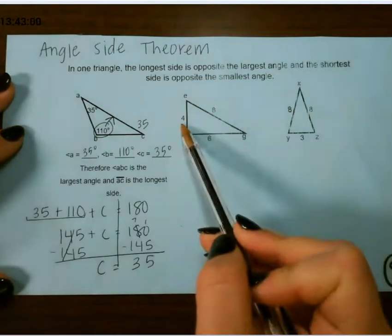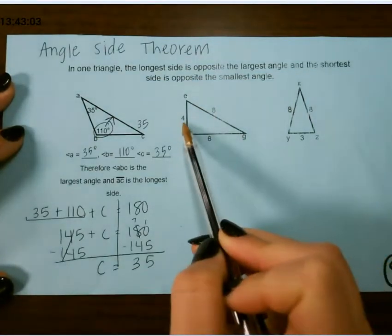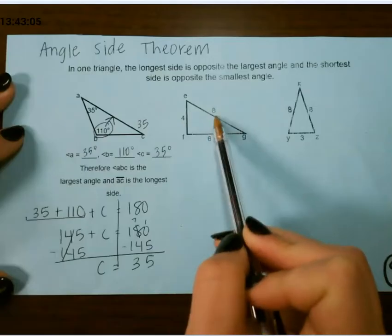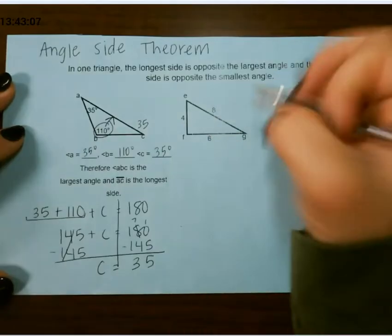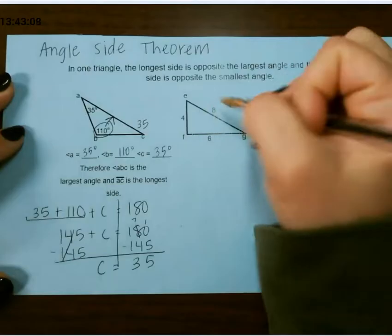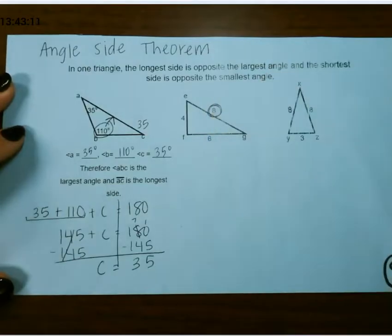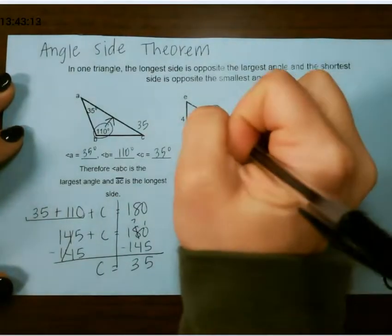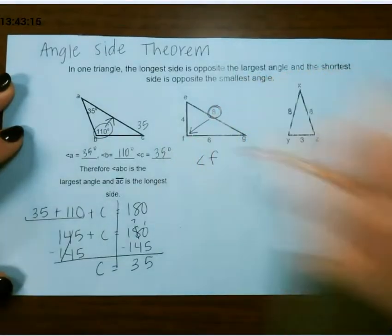On this one, we're just looking at side lengths. So we have a side length of 4, 8, and 6. So the longest side is going to be 8, which means our largest angle is directly across from that, which is angle F.